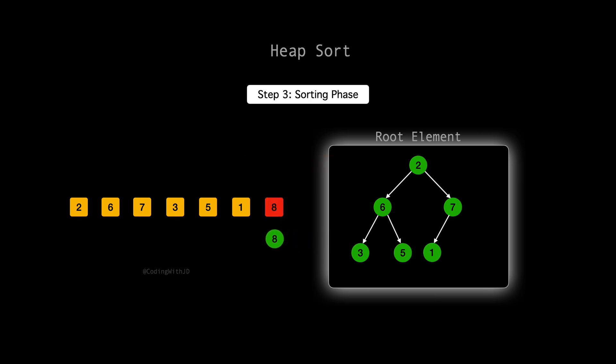But notice, swapping disturbed our heap structure. The new root is 2, which may not satisfy the max heap property. So, we need to heapify the tree again.